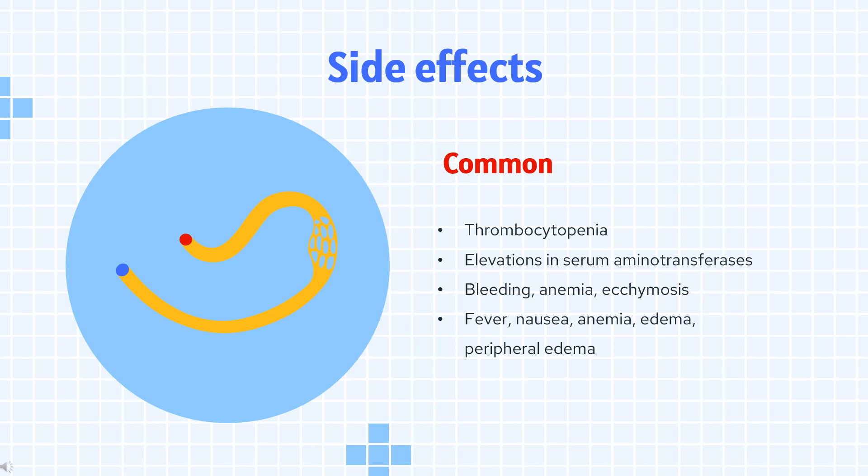In persons undergoing hip or knee replacement: fever, nausea, anemia, edema, peripheral edema (≥2%). In persons with severely restricted mobility during acute illness: dyspnea, cytopenia, confusion, diarrhea, nausea (≥2%).